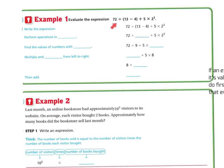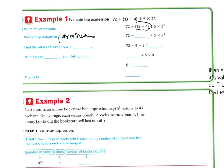Let's evaluate the expression 72 divided by parentheses 13 minus 4, plus 5 times 2 to the third power. We write our expression and perform the operations. First, we do the parentheses: 13 minus 4 is 9.